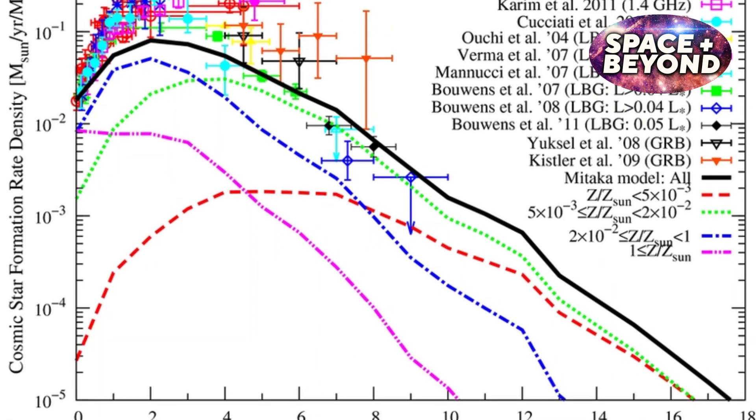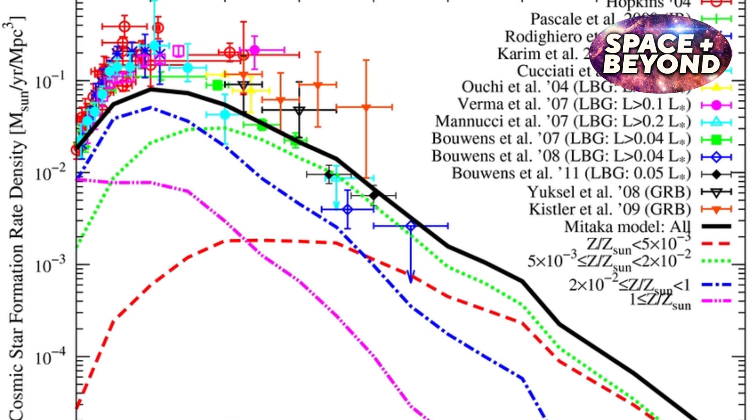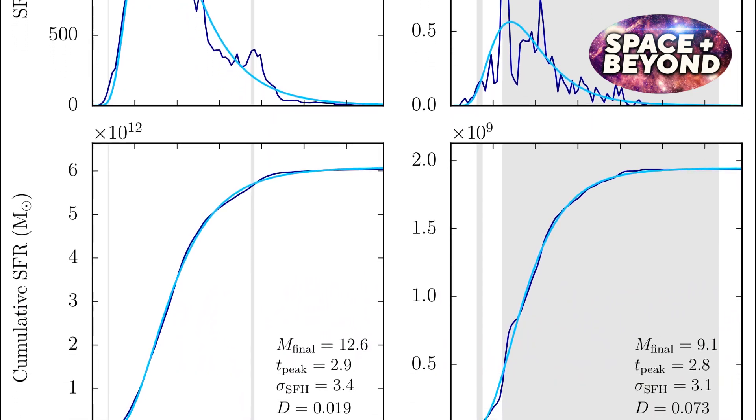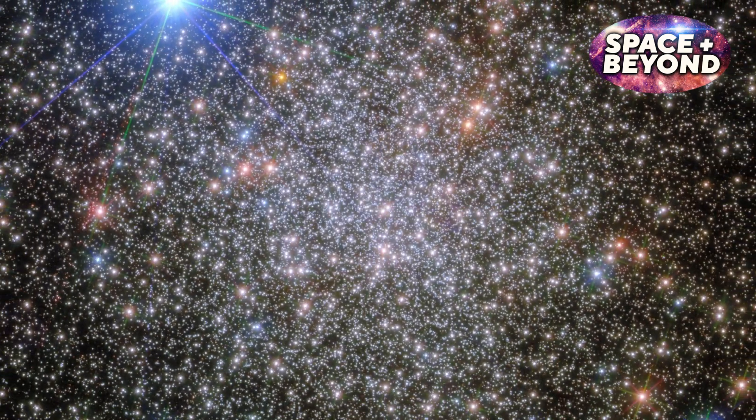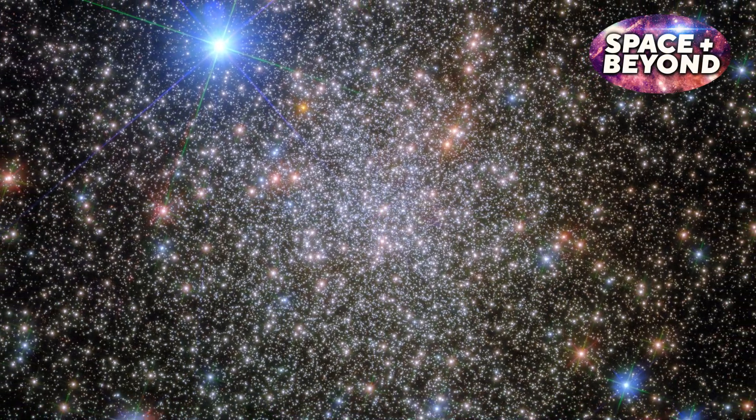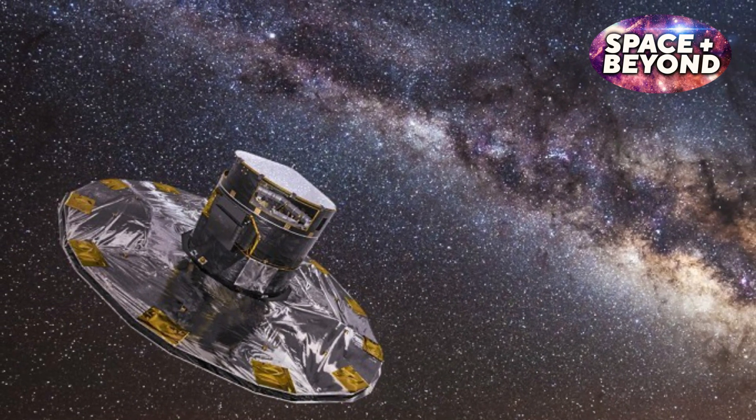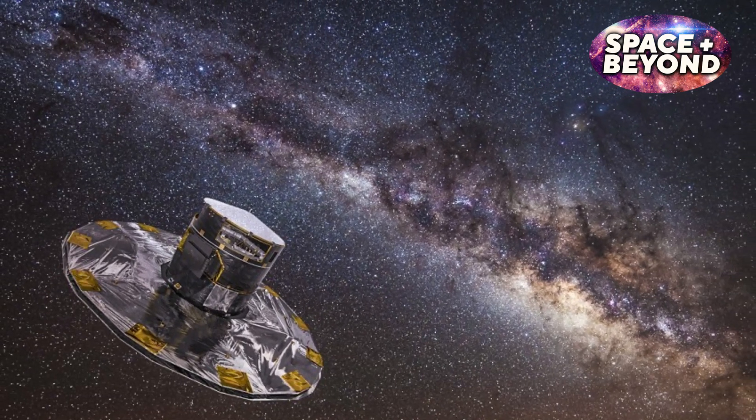This data can be used to infer information about their formation histories, chemical abundances, and other physical parameters. Finally, by measuring how far away the stars are from us and how quickly they move, Gaia is able to map out the three-dimensional motion of stars in the Milky Way for the first time.